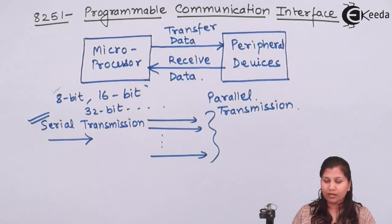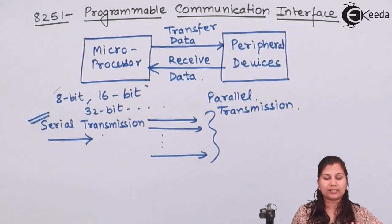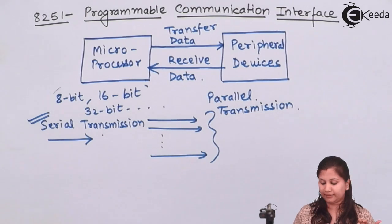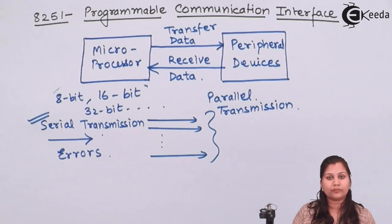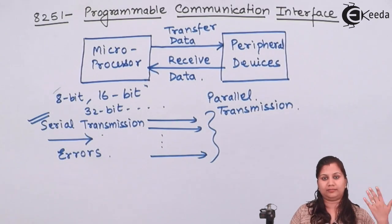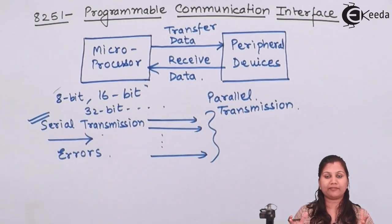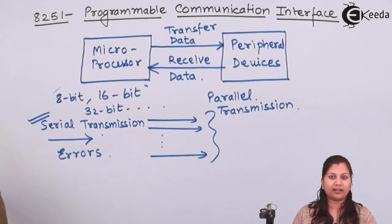In serial transmission, because transmission is taking place over a long distance, there are chances that errors can occur. Errors mean that the transmitted data and the data received by the peripheral device are different — then an error has occurred. So there are chances that errors can occur.